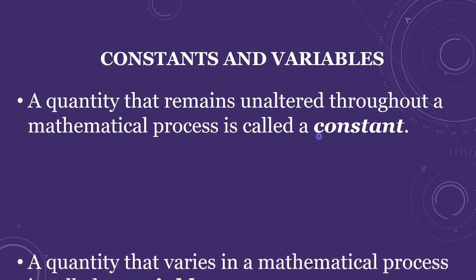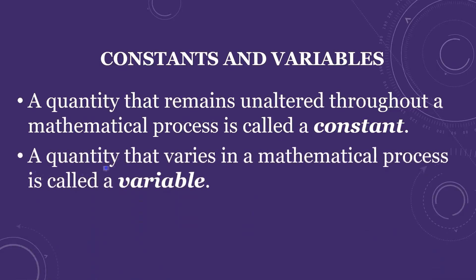A quantity that varies in a mathematical process is called a variable. For example, x plus y equals 6 — we can have 2 plus 4, or 1 plus 5, and so on. Here x and y change values, so they are called variables.